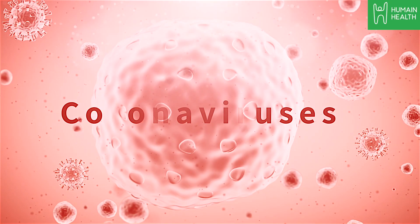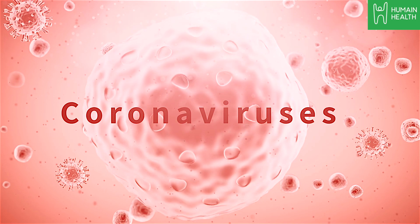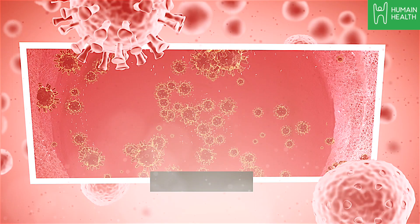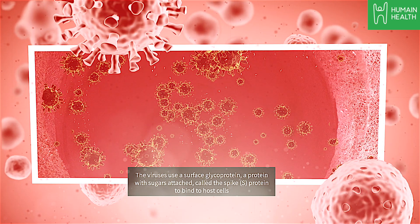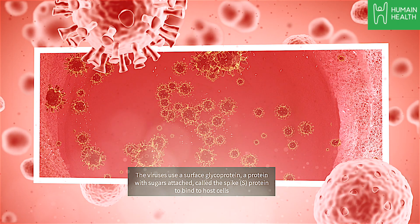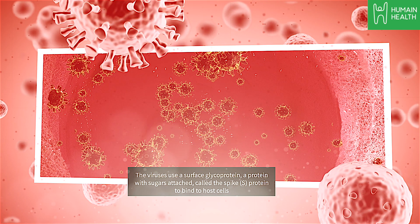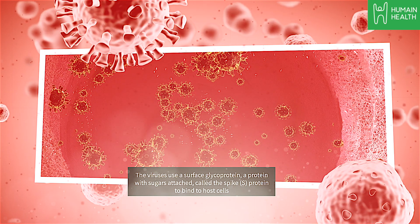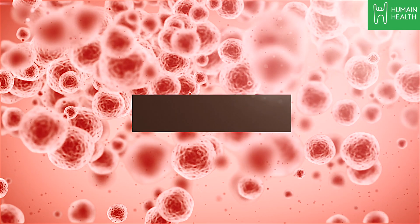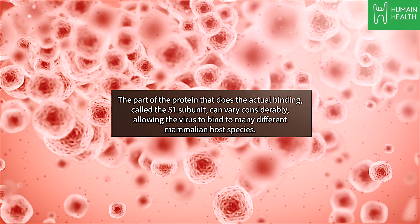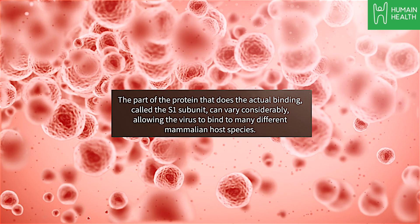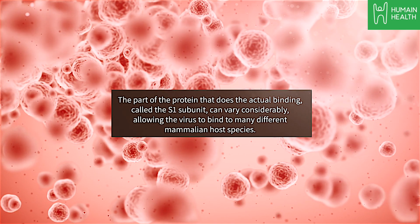Coronaviruses have become quite good at figuring out how to use these receptors to gain entry to their host cells. The viruses use a surface glycoprotein — a protein with sugars attached — called a spike protein, to bind to host cells. This protein gives the virus a crown-like appearance, which is where the 'corona' in its name comes from. The part of the protein that does the actual binding is called the S1 subunit and can vary considerably, allowing the virus to bind to many different mammalian host species.